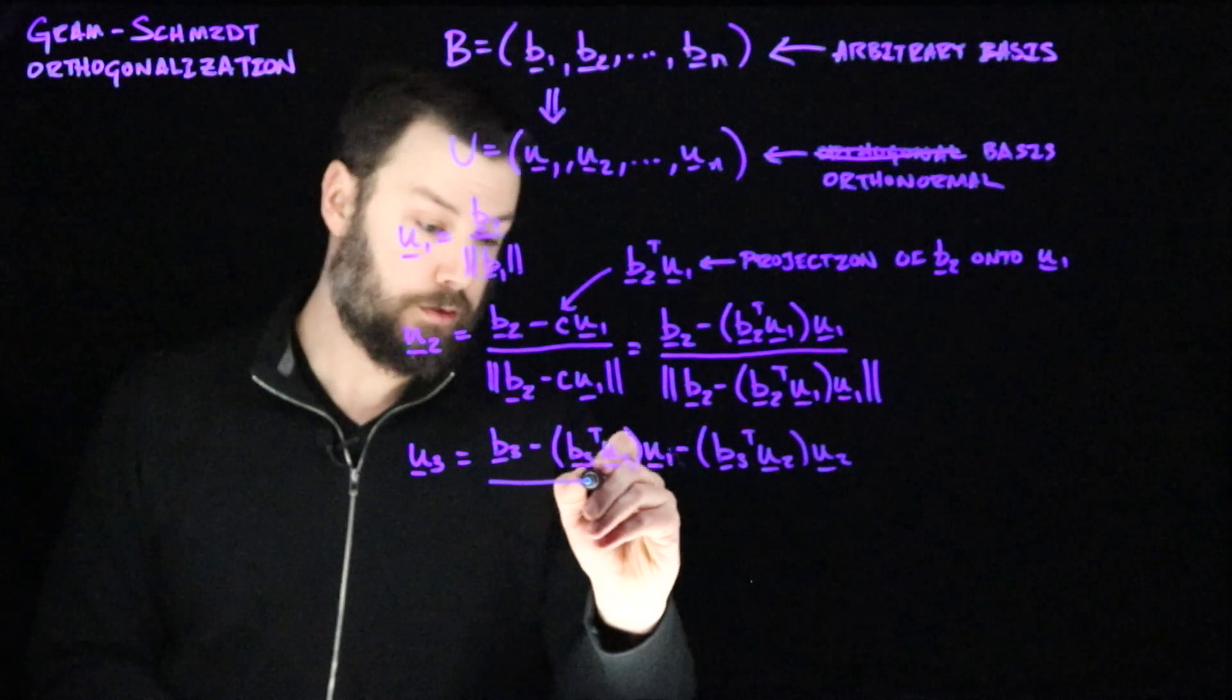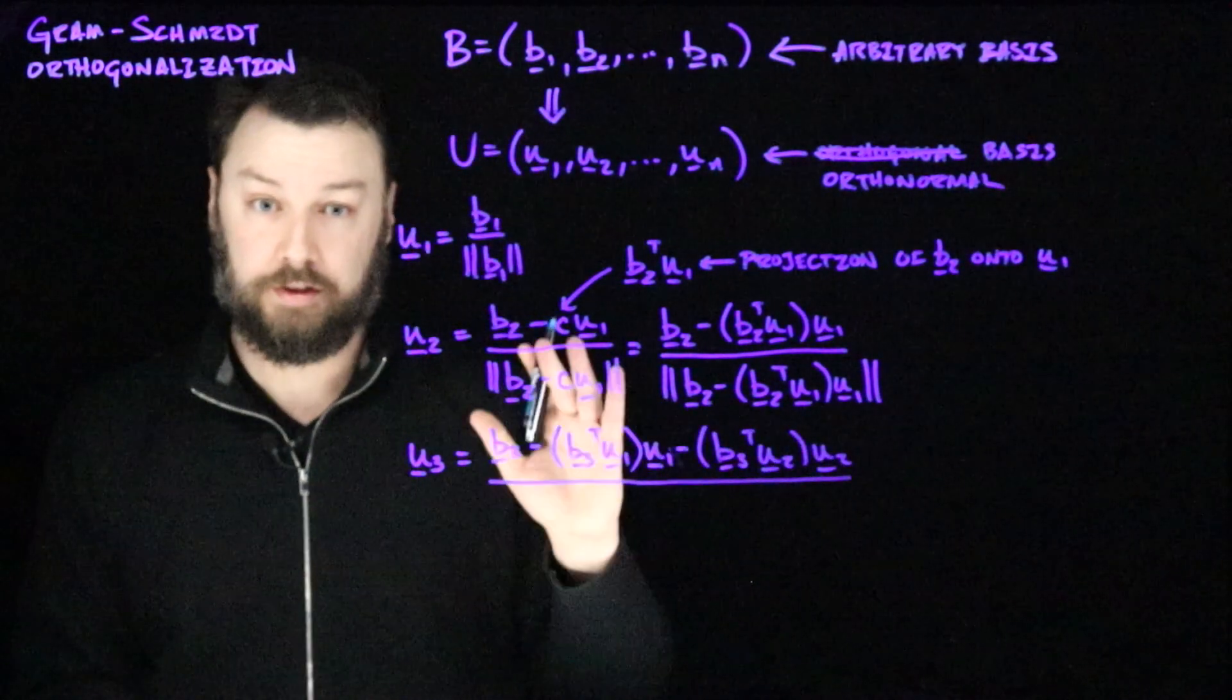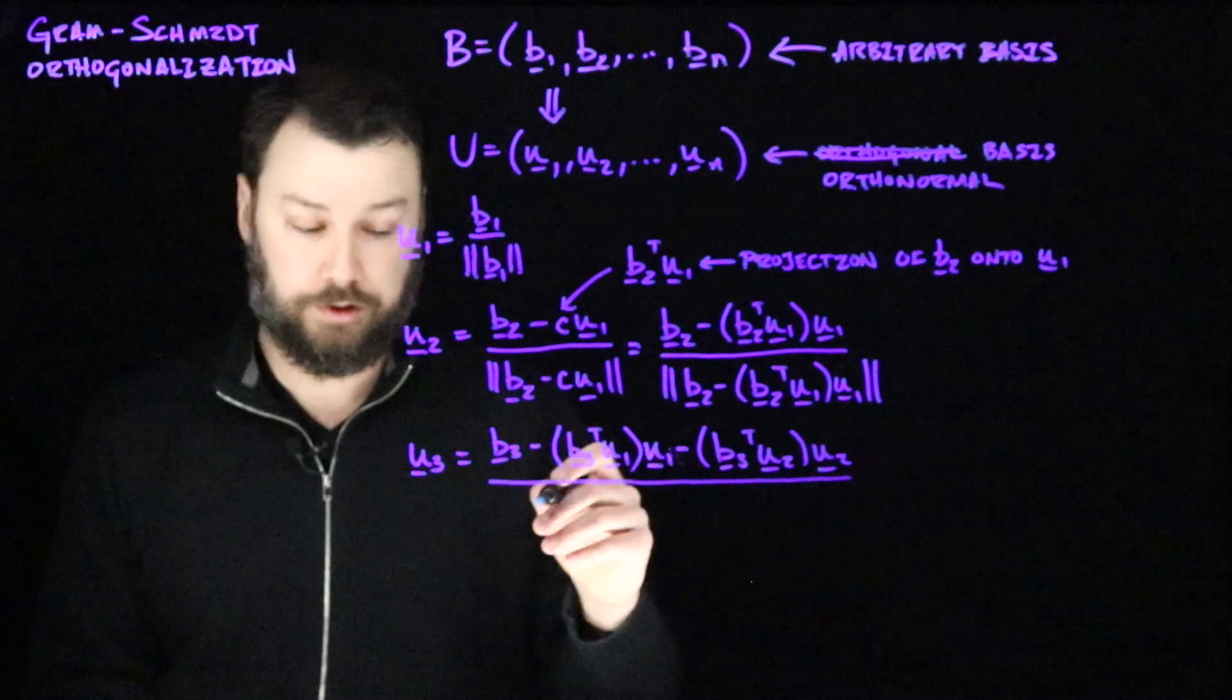And then as before, we normalize this by dividing by its norm so that it's unit length.